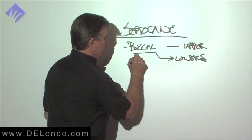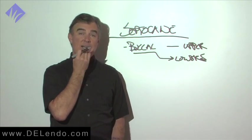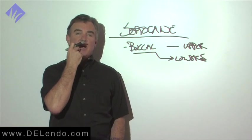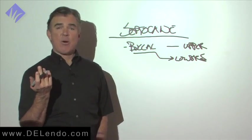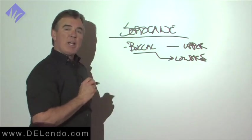Another nice thing about doing buccal infiltration with septocaine is if you're doing lower anteriors, premolars, instead of giving a block and having the patient's whole lip numb, simply infiltrating over the root apex of that tooth, will usually give you at least an hour, maybe an hour and a half of anesthesia.